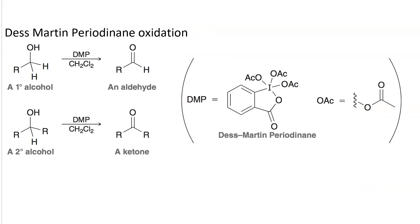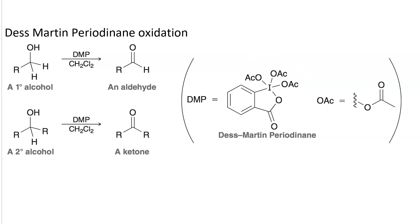There's also the Dess-Martin periodinane (DMP). We won't go through its mechanism, but it has the same net result as the Swern oxidation: primary alcohol to aldehyde, and secondary alcohol to ketone. In a synthesis, it appears as DMP with CH₂Cl₂ (dichloromethane) as the solvent.